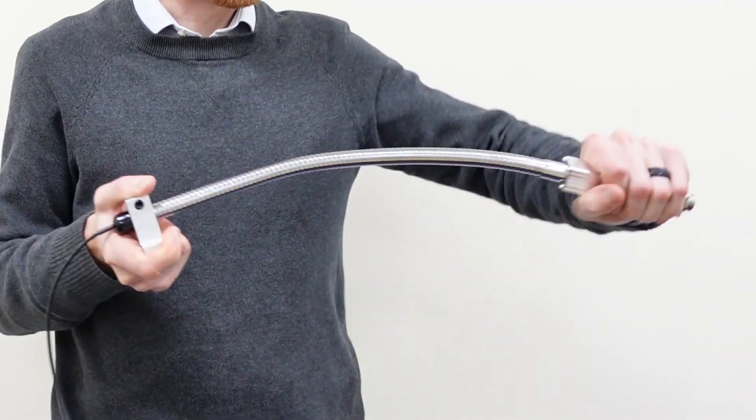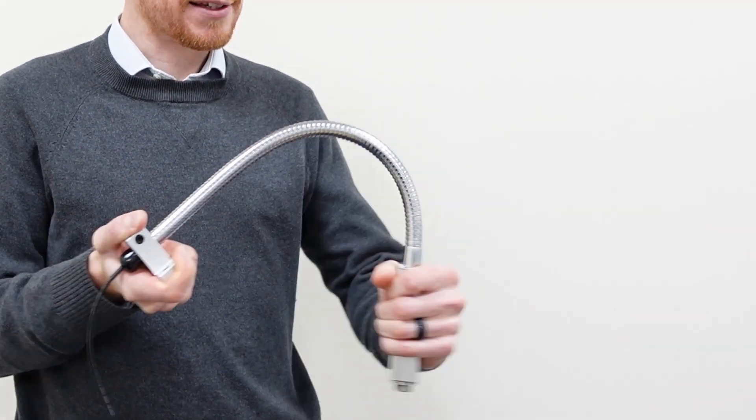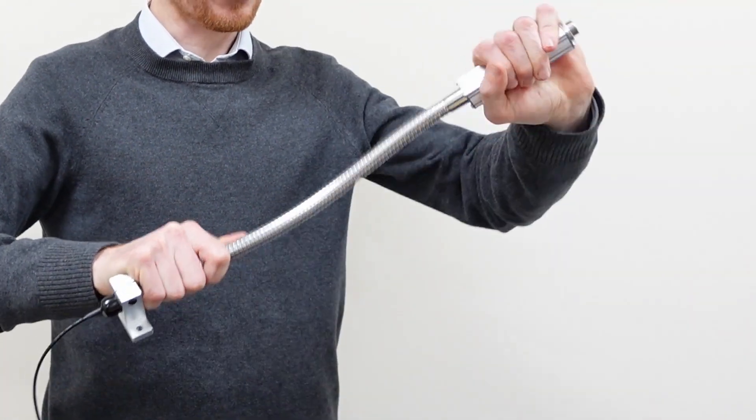Grab the sensor, move it to a new position, and the gooseneck is stiff and rigid enough to support the weight of the sensor whichever angle you place it at.